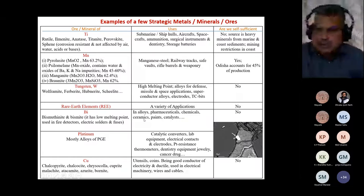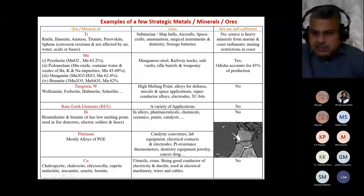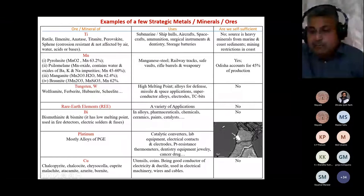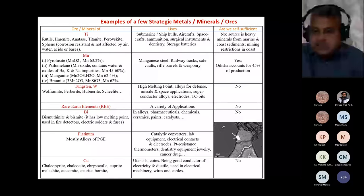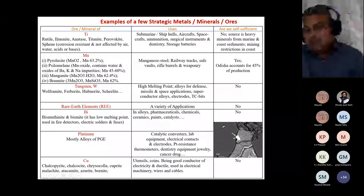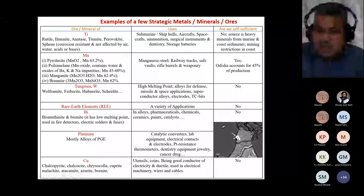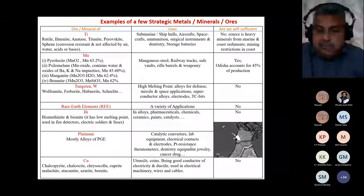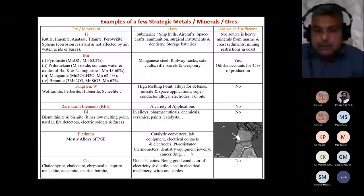Manganese is used in railway tracks, safe walls, rifle barrels, and weaponry. India is relatively self-sufficient in manganese, with Odisha accounting for about 55% of production. Tungsten has a very high melting point and is used as an alloy in defense, missile, and space applications, superconductor alloys, electrodes, and tungsten carbide bits — but we are not self-sufficient in tungsten. Rare earth elements have a variety of applications and we are not self-sufficient. We also have bismuth — used in alloys, pharmaceuticals, chemicals, ceramics, paint, and catalysts — we are not self-sufficient there either. Platinum group elements occur in nanoscale concentrations, requiring highly focused exploration techniques, which is why we have very few proven PGE prospects in India.